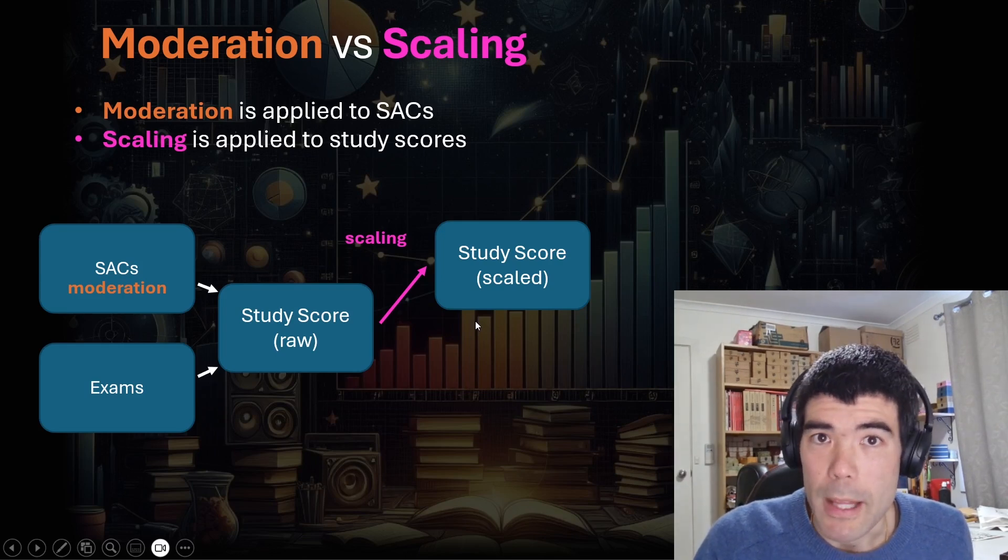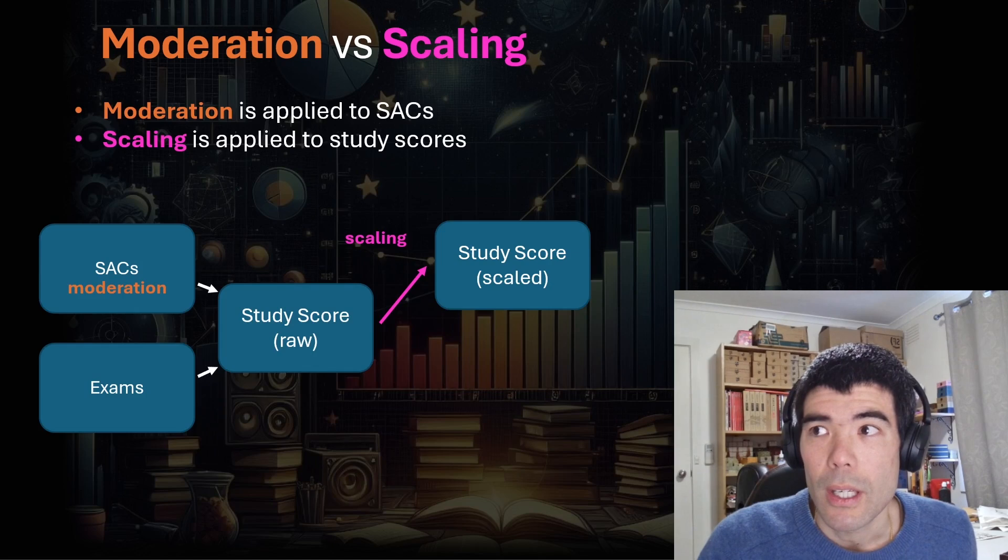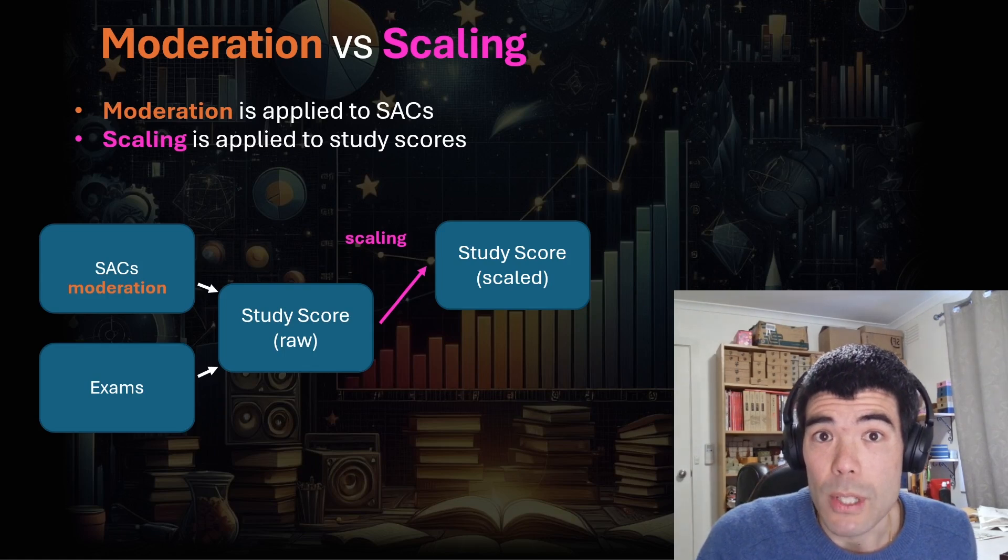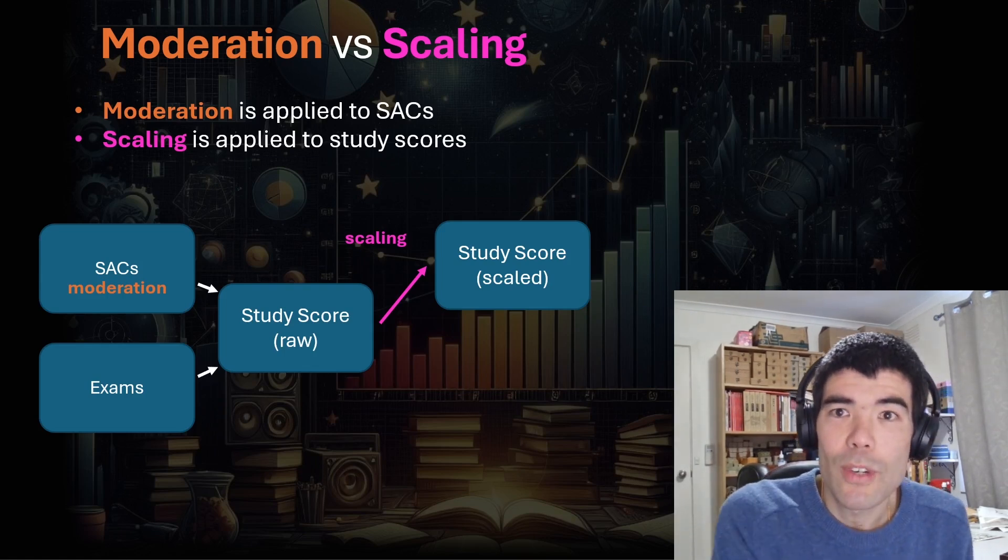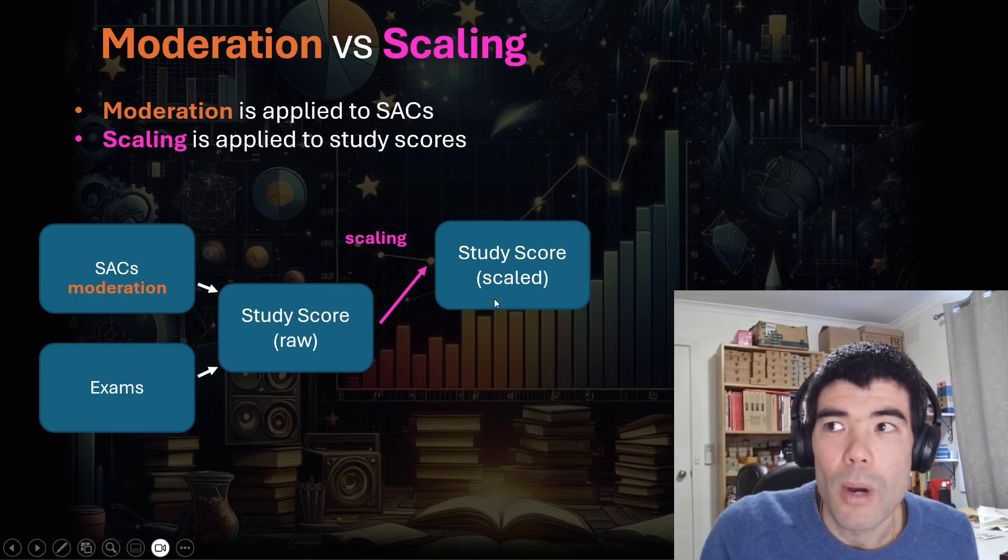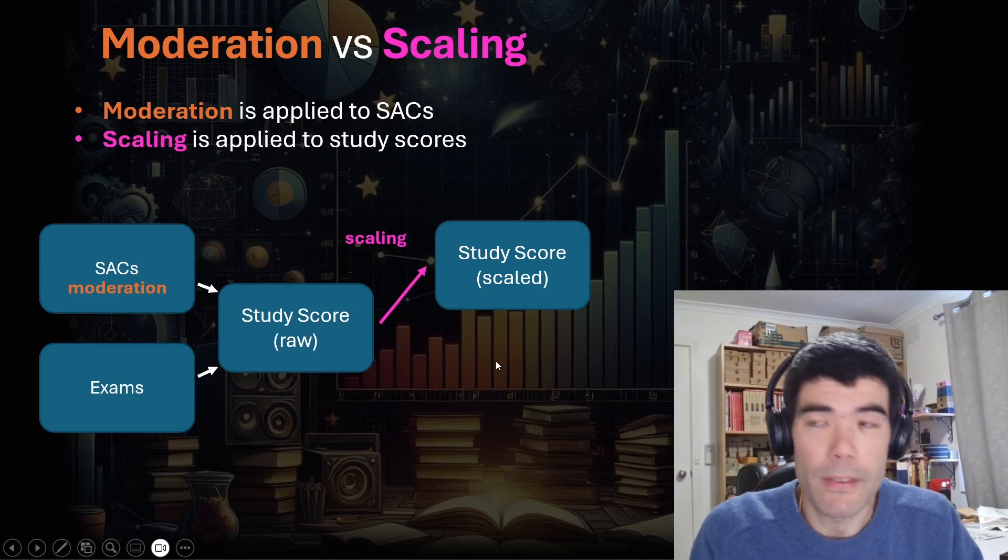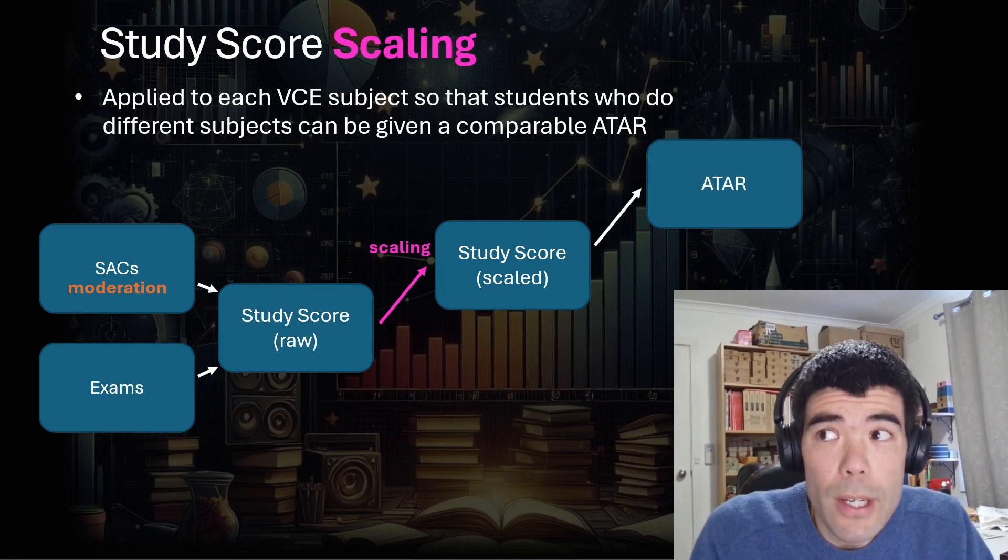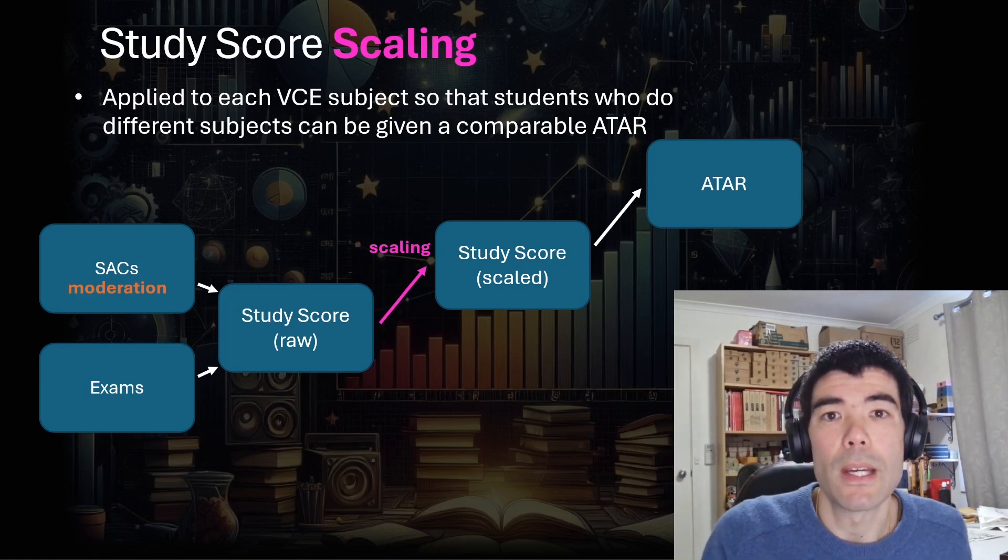So for example, specialist mathematics, in order to get an average score of 30, you actually already need to be very good because the students choosing specialist mathematics tend to be the top 10% of students in maths. So to be average of those top 10%, you really need to be like in the top 5% of students in mathematics. So that is why the subject study scores need to be scaled to adjust for that fact, because getting a score of 30 in specialist mathematics is a lot more difficult than getting a score of 30 in some other subjects.